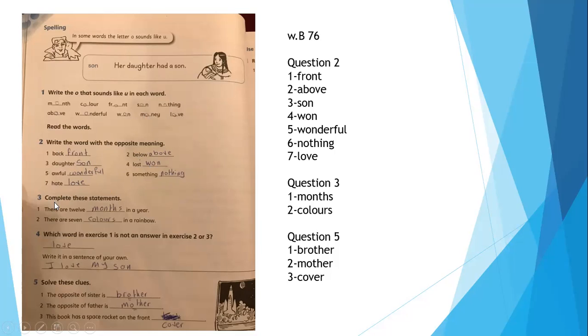Here, continue these sentences or these statements. There are 12 months in the year. There are seven colors in the rainbows.